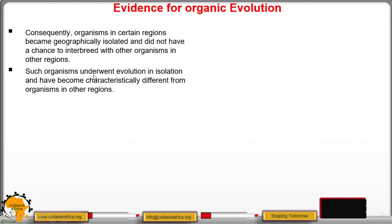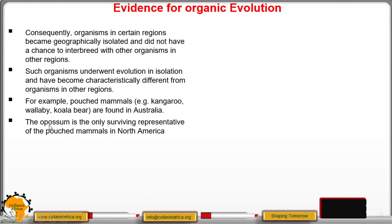Such organisms underwent evolution in their own and have become characteristically different from organisms in other places. For instance, pouch mammals like kangaroo, wallaby and koala bear are found in Australia. While the opossum is the only surviving representative of the pouch mammals in North America.